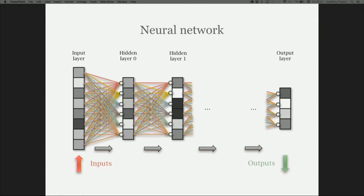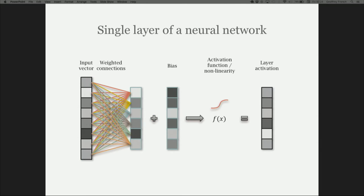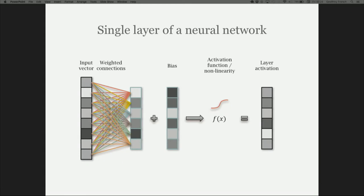You can see there are weights that connect all the units between the layers, with data being put in on the input and propagating through to the output. Breaking down a single layer of a neural network: we've got our input — a vector, an array of numbers — we multiply by our weights matrix, then add a bias term (simply an offset), then apply our activation function or non-linearity. That layer activation is then what goes into the next layer or the output if it's the last layer.